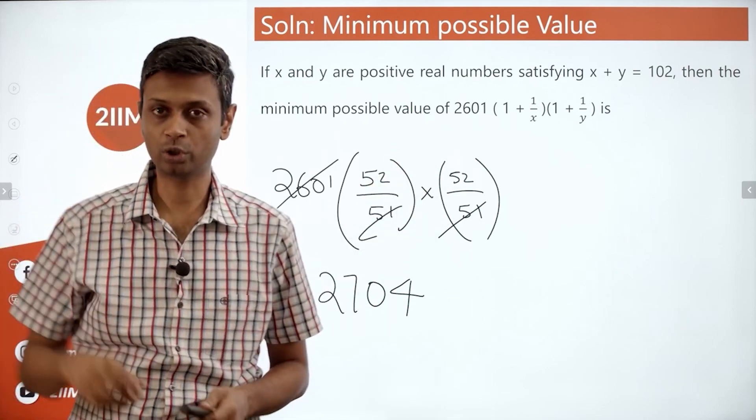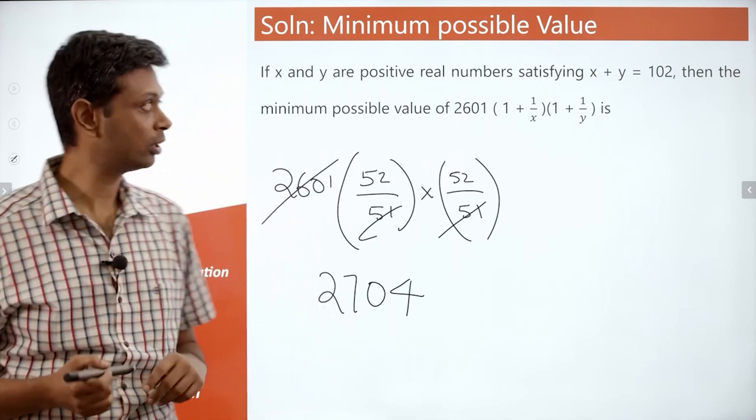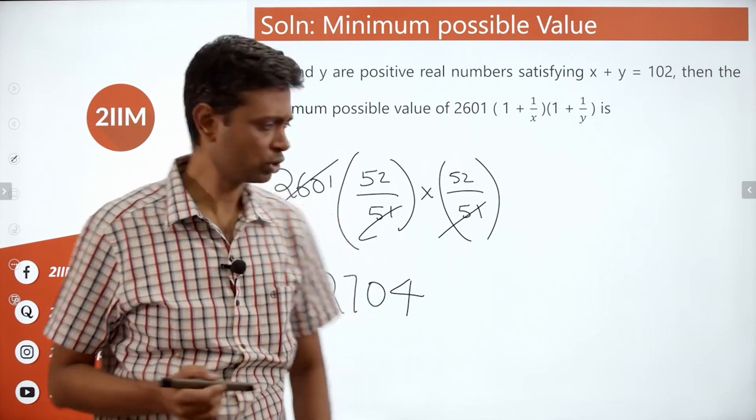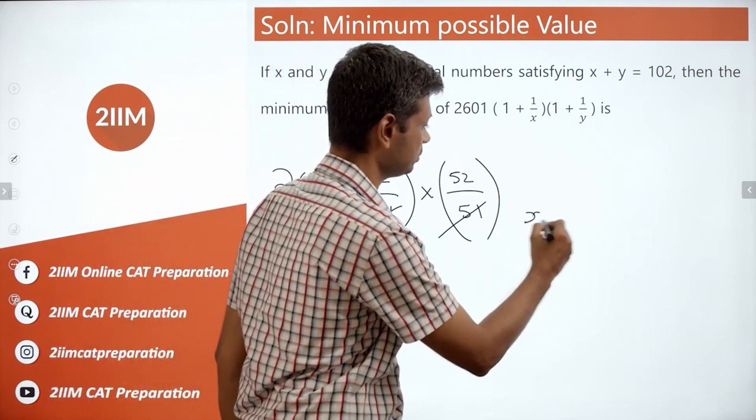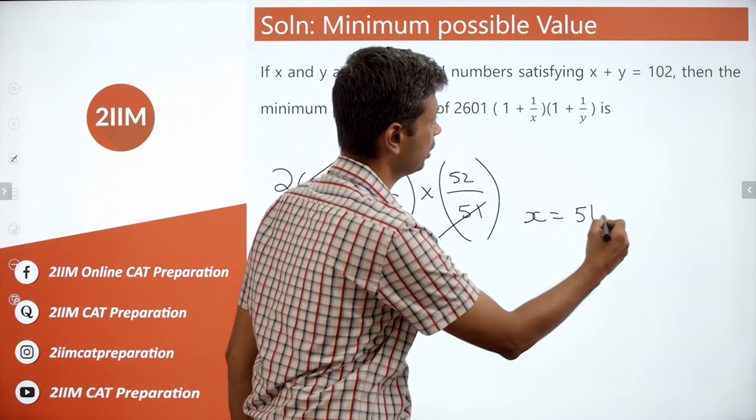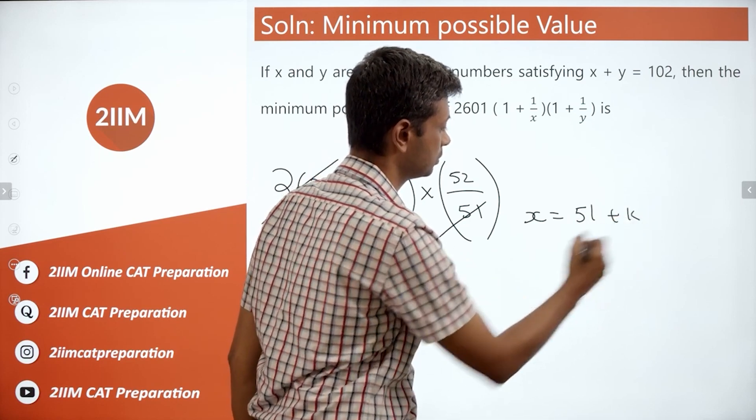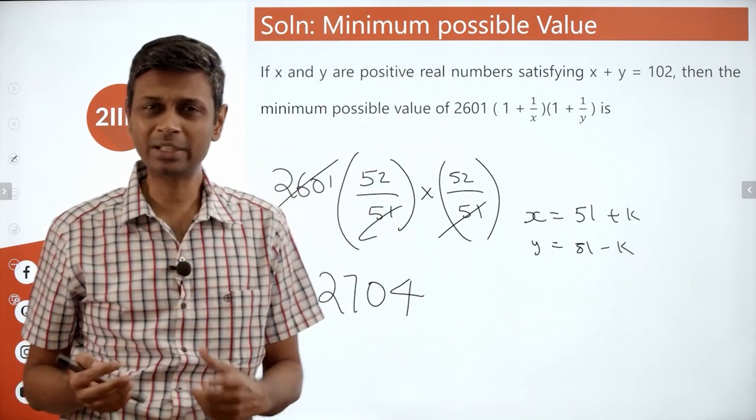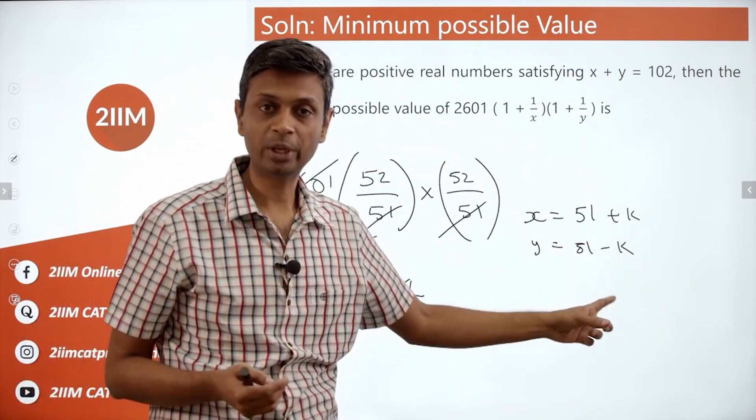Go for the small number, you're good to go. The other way of doing this: x plus y is 102. I'm going to anchor around the midpoint, so I'm going to say x is 51 plus k, y is 51 minus k. So we've incorporated that constraint with a single variable.